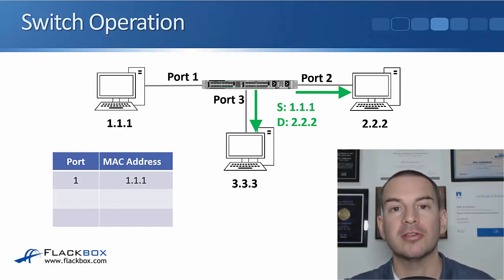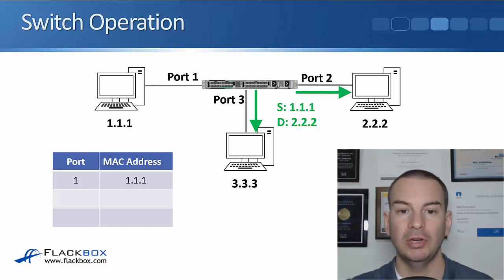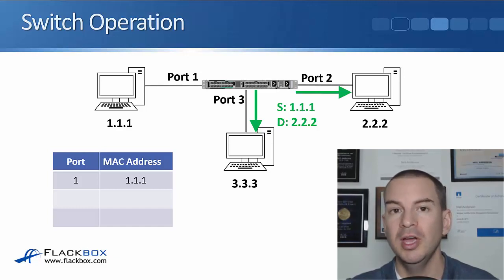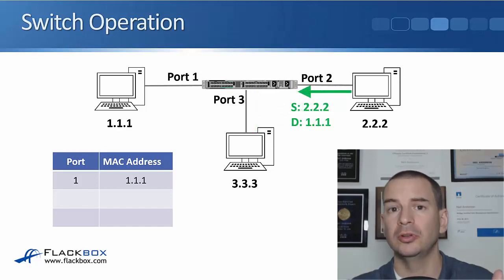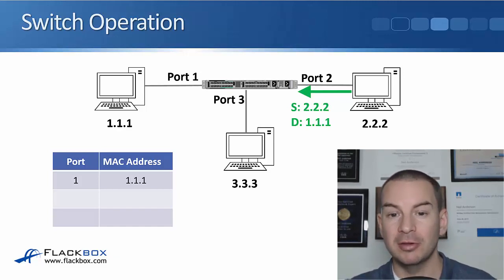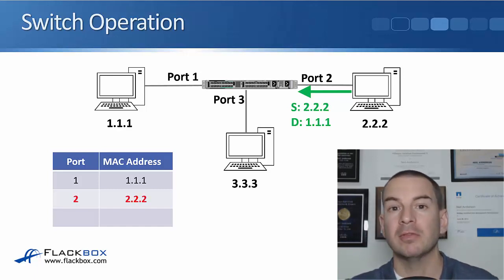The destination 2.2.2 is not in the MAC address table yet, so it's an unknown unicast address. The switch will flood it out all ports apart from the one it was received on, so that will be sent out ports 2 and 3. Host 3.3.3 will see that the destination MAC address is 2.2.2, that's not it, so it will silently discard the frame.